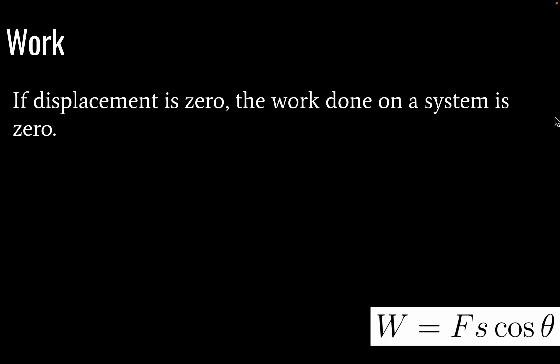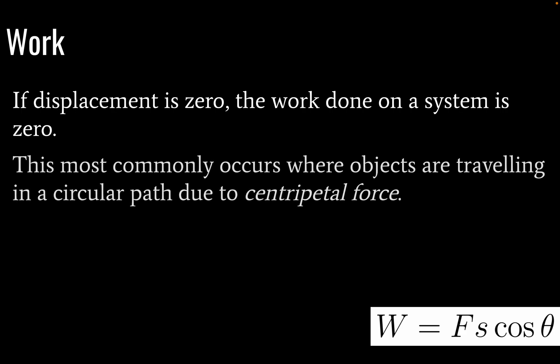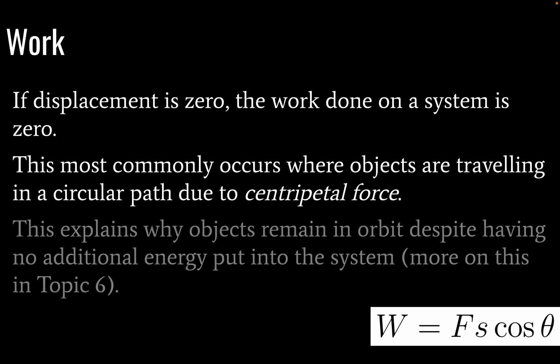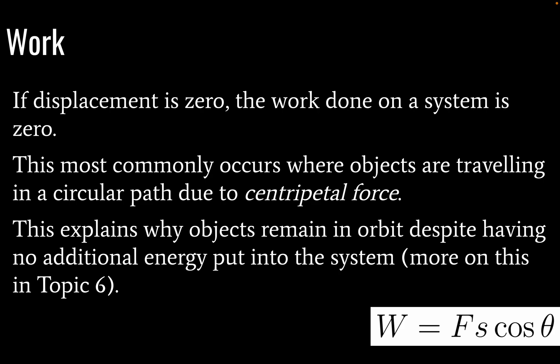If displacement is zero, the work done on a system is zero. Keep that in mind for topic 6 when we're looking at orbital and circular motion, particularly where objects travel in a circular path due to centripetal force. This also explains why objects remain in orbit despite having no additional energy put into the system — for example, satellites or the moon. The moon doesn't have a little rocket on the back keeping it going, but it remains in a relatively stable orbit around the Earth.